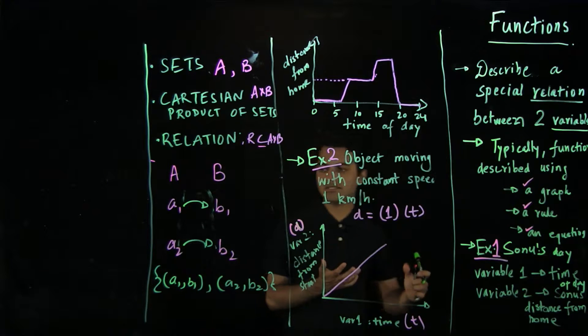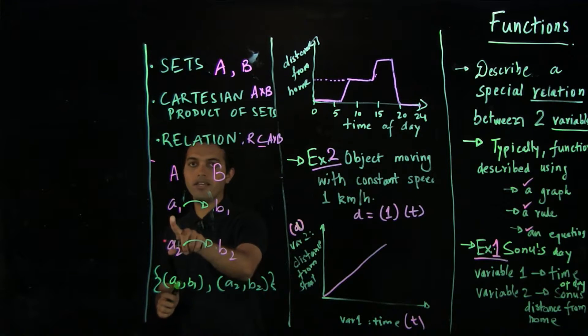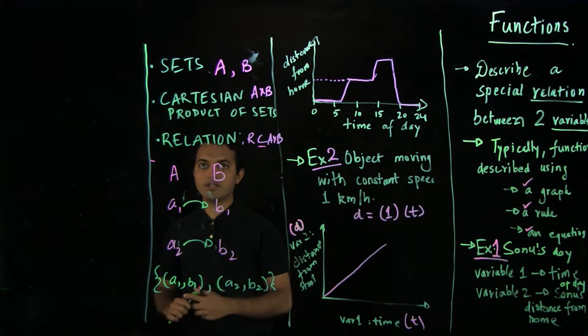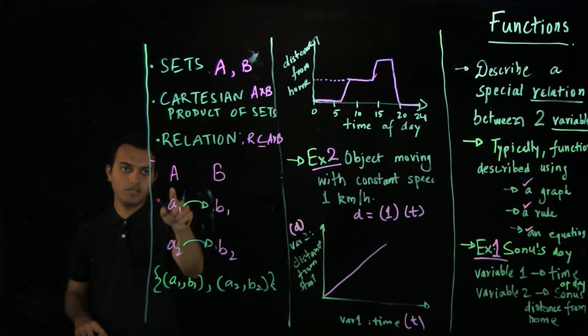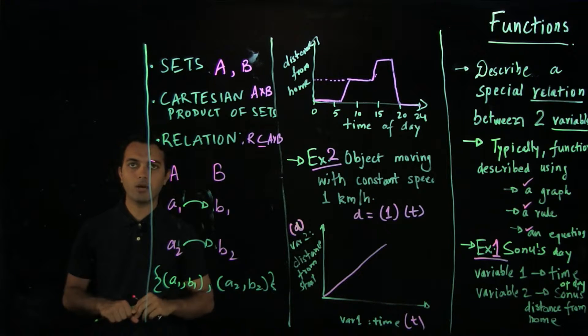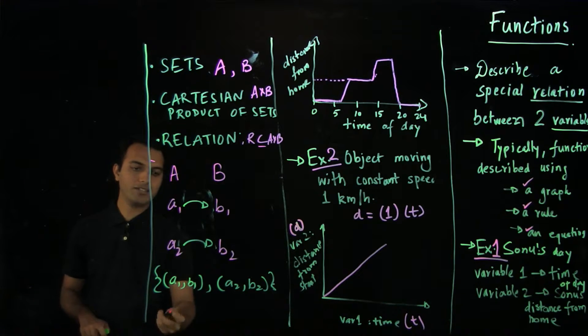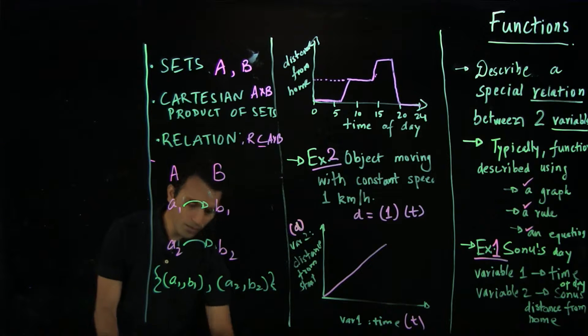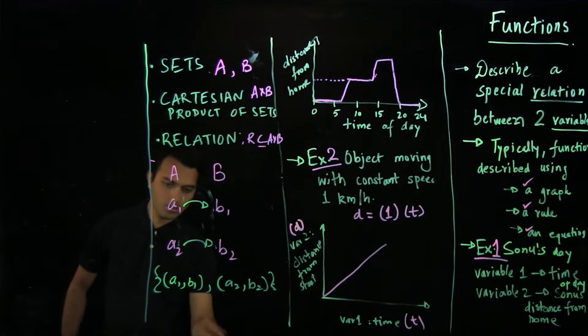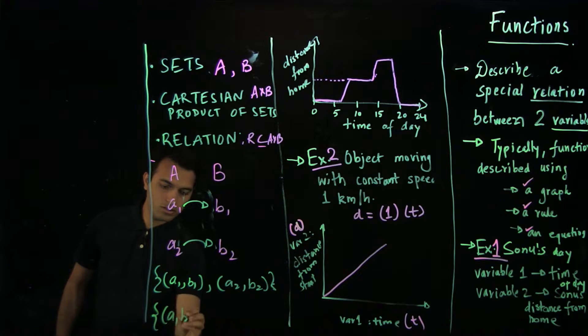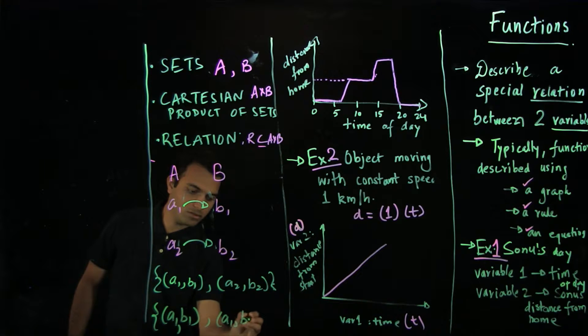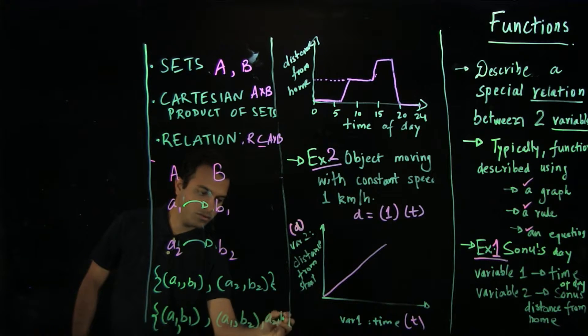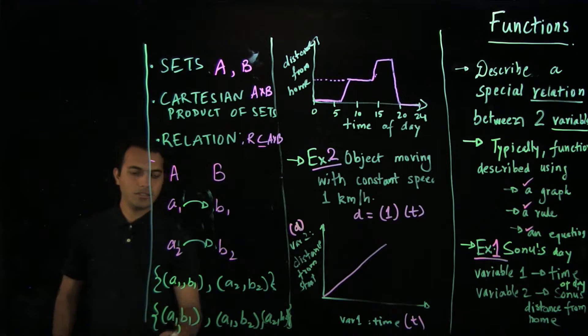So functions are those relations for which each element from the input variable does not have mappings to two elements from the output variables. So each element from the input set has only one edge going outside of it. So let us say if we have another relation,